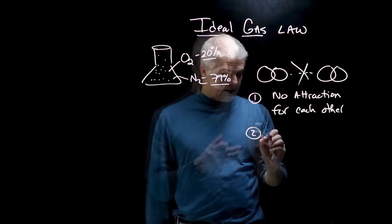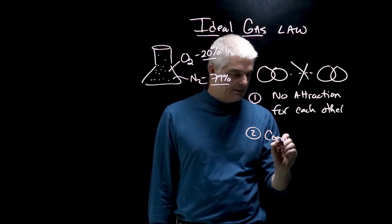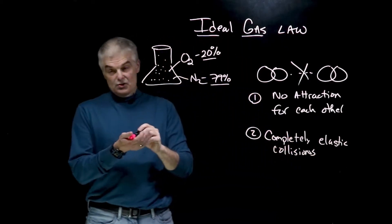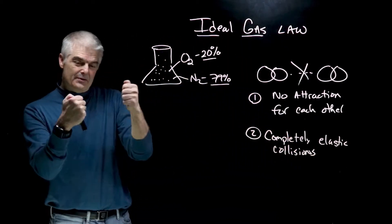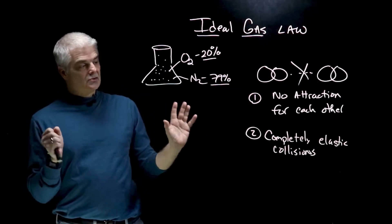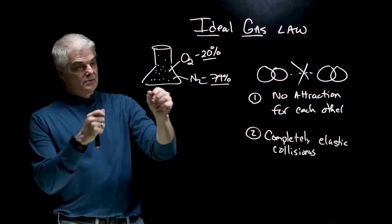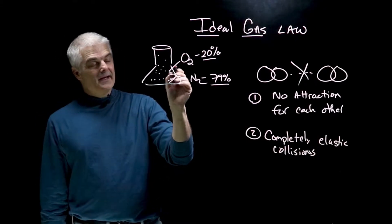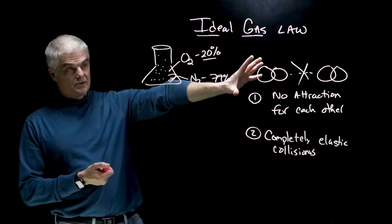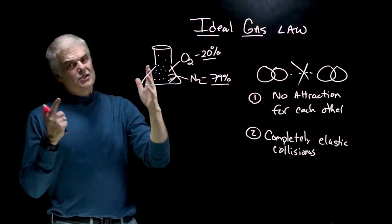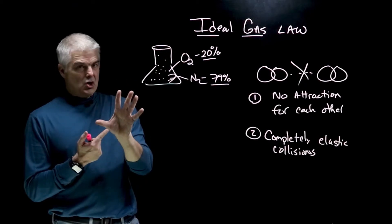And the second thing is that they have what we call completely elastic collisions. Now what that means is when they do, boom, pop into each other, they bounce. They bounce where no energy is lost. That's actually a pretty good assumption. So sometimes these molecules, they whack into each other and then they bounce off. So those are the two assumptions. Note that there really is no such thing as an ideal gas, but it's close enough for all intents and purposes.